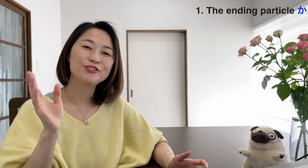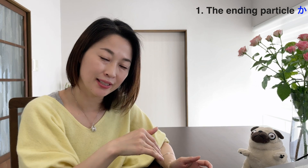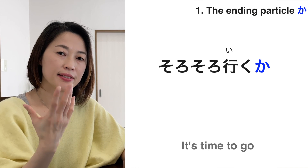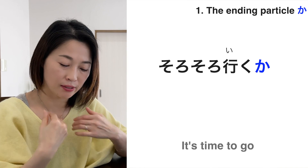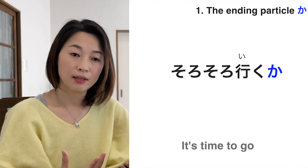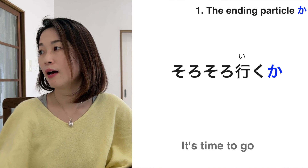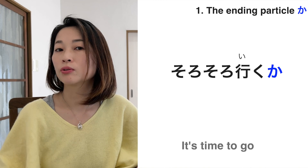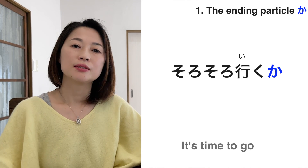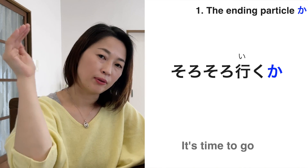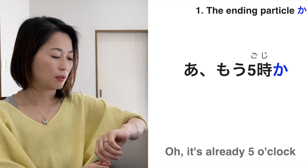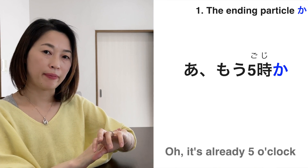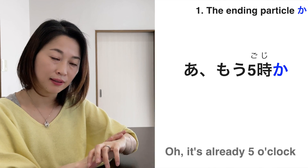We do use ka in Tameguchi, but with a falling intonation. For example, sorosor iku ka? — said to yourself, it means you're suggesting you should go now. Said to someone else, sorosoro iku ka? suggests that we should go now. We also use ka with a falling tone when you've just realized something, like when you notice it's already five o'clock.